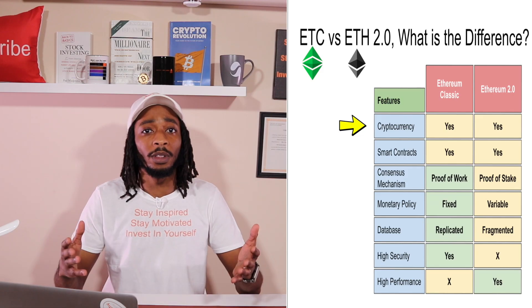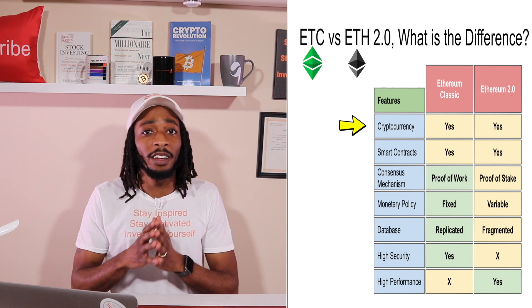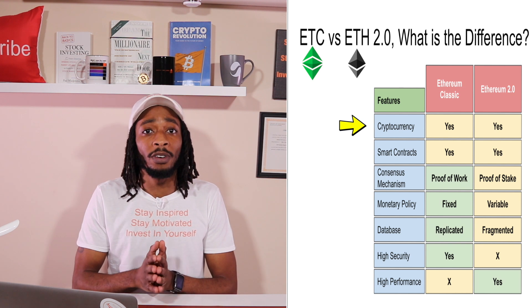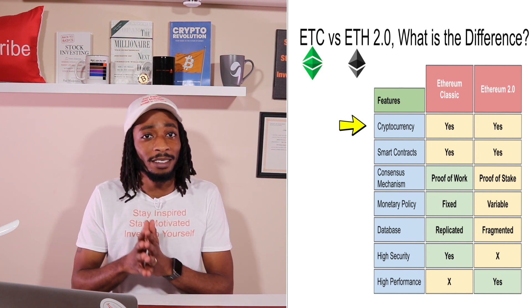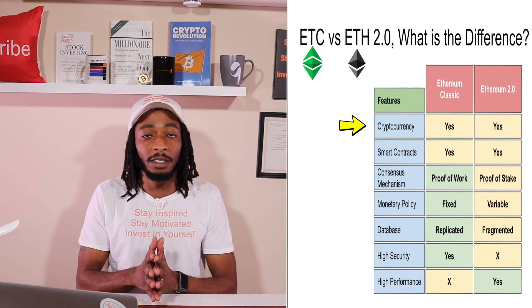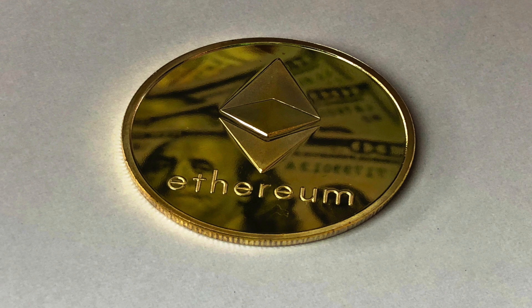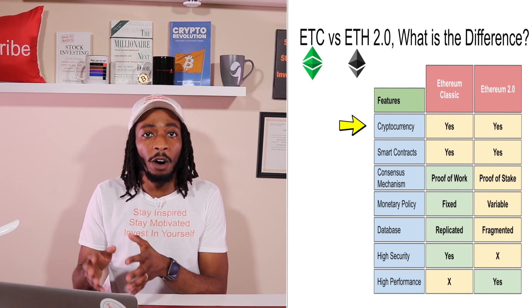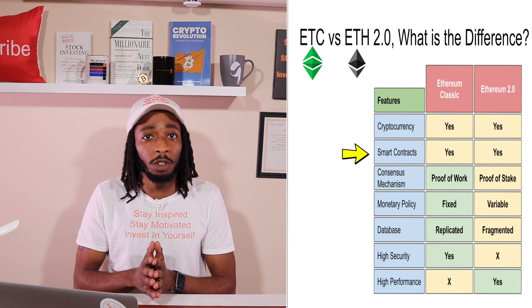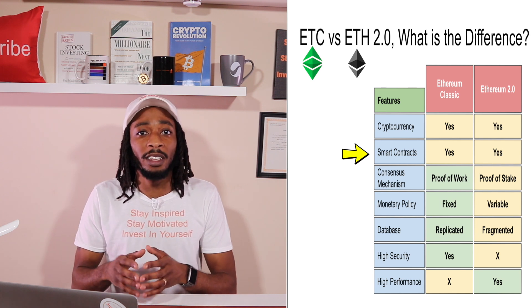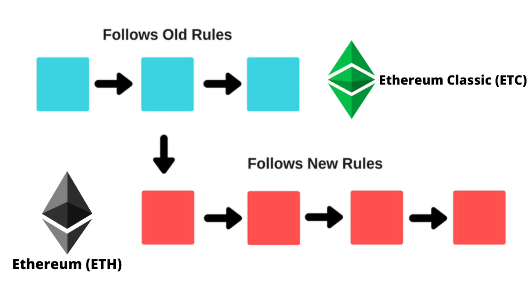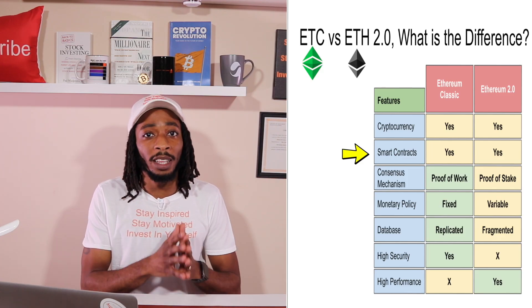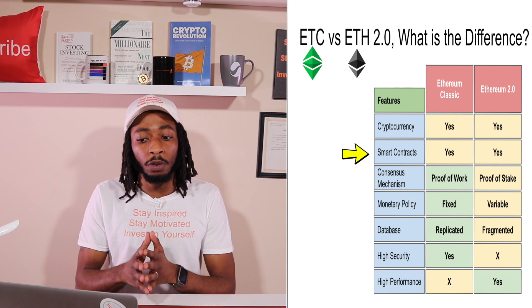Now let's look at the difference between Ethereum Classic and Ethereum 2.0 once Ethereum switches to layer 2, known as proof of stake. Both blockchains have their own native cryptocurrency: Ethereum Classic has the ETC token, and Ethereum has the ETH token. They both also support smart contracts — since Ethereum 2.0 is basically a new fork of the old blockchain, both are programmable blockchains which allow dApps to be built upon them.